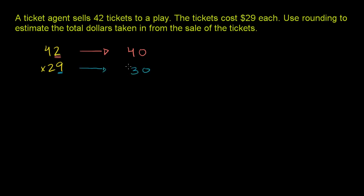Another way to think about it: 42 is pretty close to 40, and 29 is pretty close to 30. Those are literally the nearest multiples of 10. So now we can multiply.